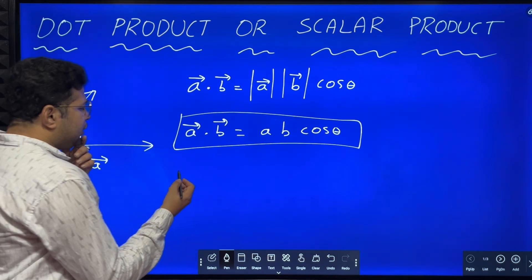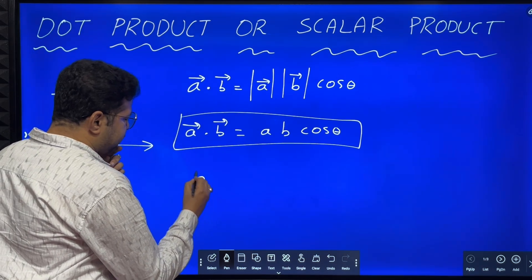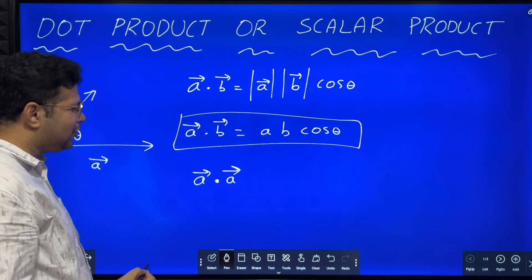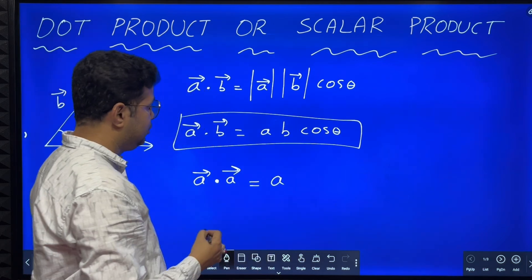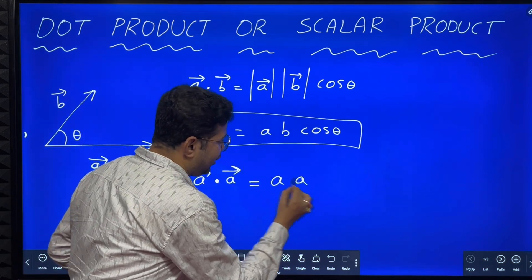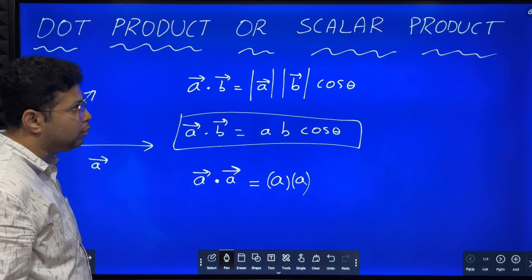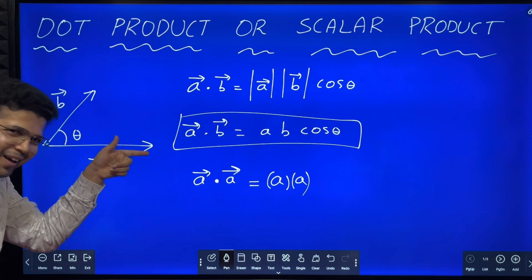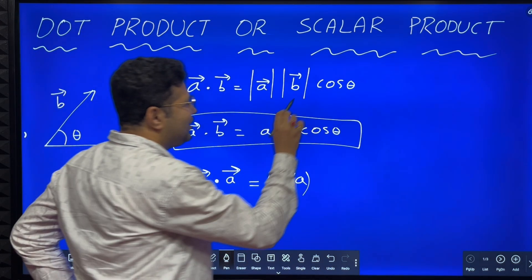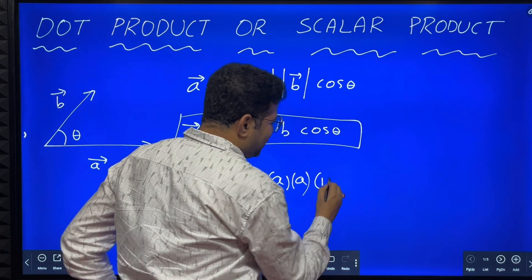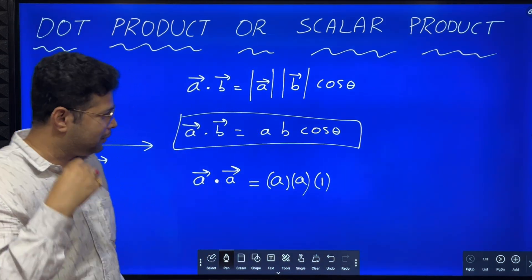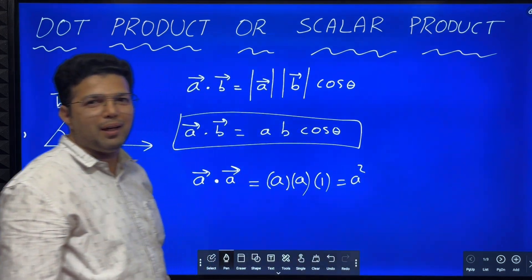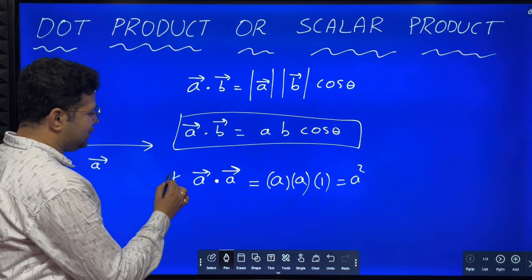Now let us take one example. What is A dot A? It equals magnitude of A into magnitude of A into cos theta. What is the angle between A and A? Zero degrees. What is cos zero? Cos zero equals one. So A dot A is equal to A square. Remember: A dot A is equal to A square.